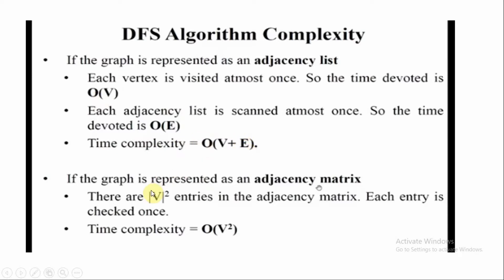If the graph is represented as an adjacency matrix, there will be V² entries. We know the adjacency matrix has V² entries, and each entry is checked only once. Therefore the time complexity will be O(V²).